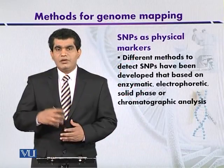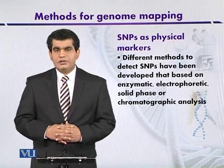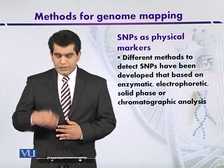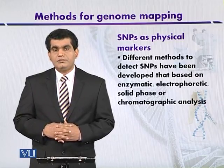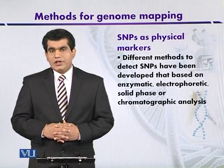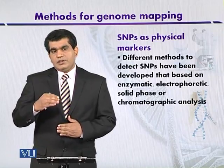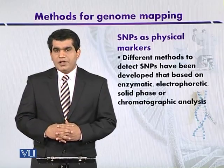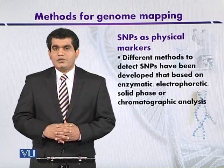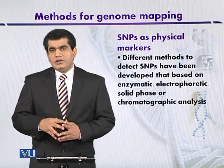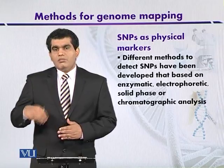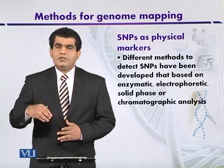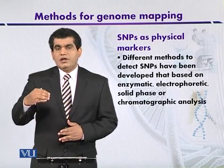SNPs are very good physical markers for mapping. The reason is that they may be present in high density — in the human genome, every 1000 nucleotides you can expect a SNP. In this way it has been reported that there may be three million such cases, and even more recent reports have increased the number of SNPs. Because of their high density, they are very useful markers.